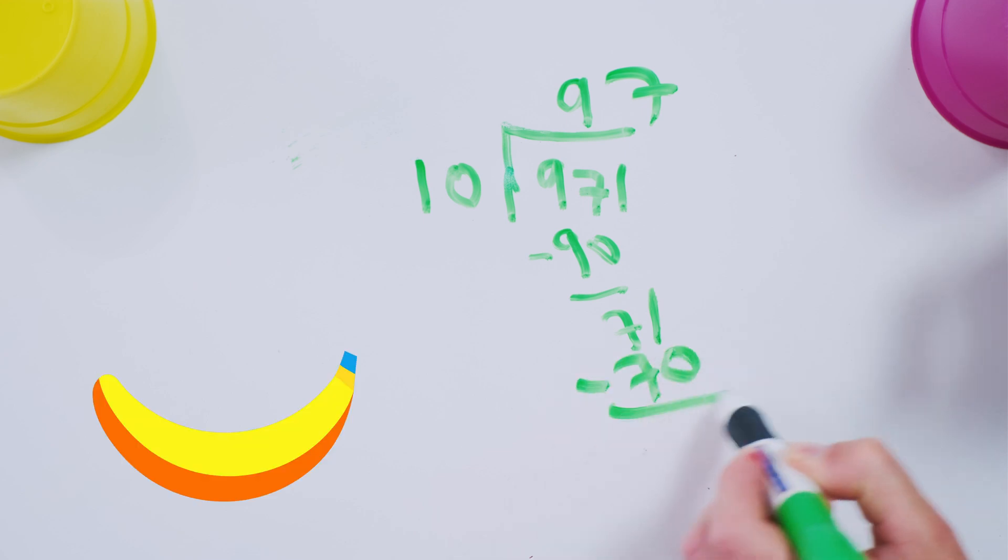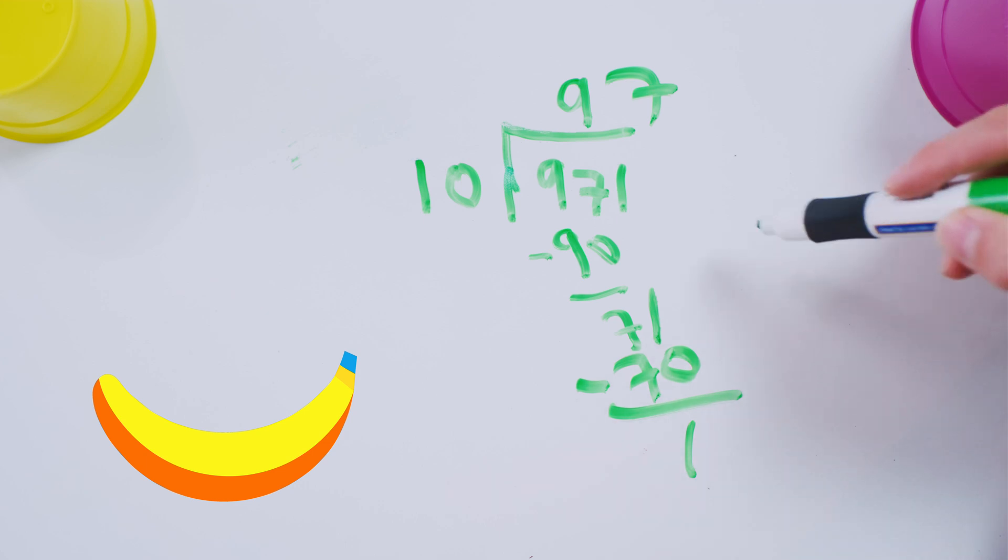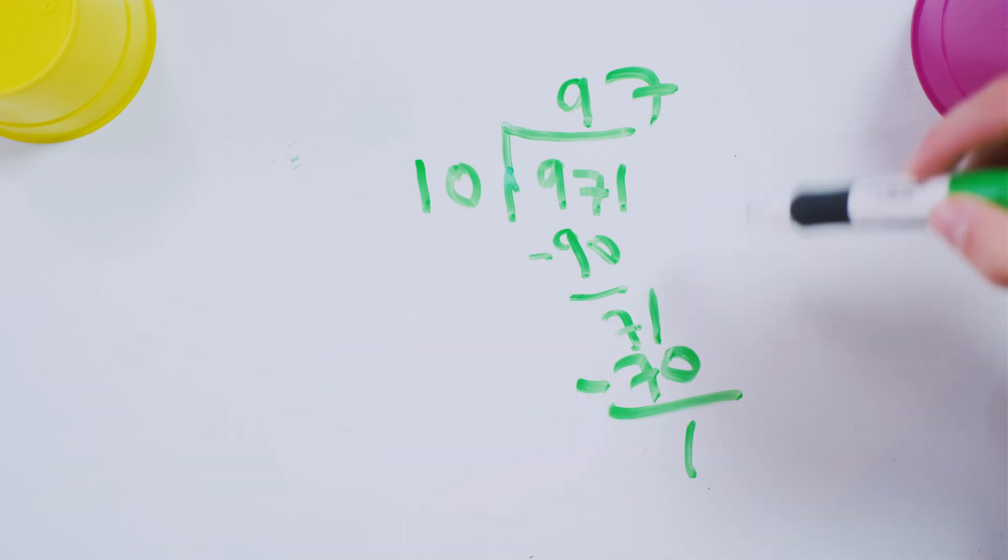Yeah, I'm making progress. Then you got a remainder of one. Okay, so 97 with a remainder of one.